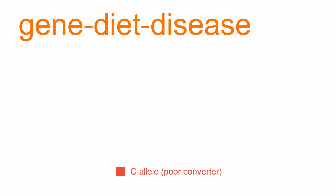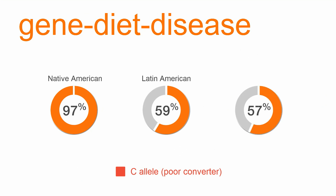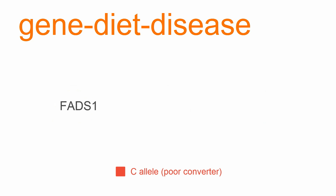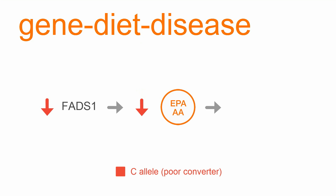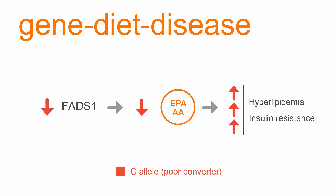From this example, we can see that low converters, prevalent in Native American, Latino, and East Asian populations, could end up with inadequate EPA and AA levels in their body when they don't have enough animal-sourced polyunsaturated fatty acids in their diet. This, in turn, could lead to insufficient activation of PPAR pathways. Prolonged deficiency would eventually impair fat utilization and energy production processes, ultimately leading to hyperlipidemia and insulin resistance.